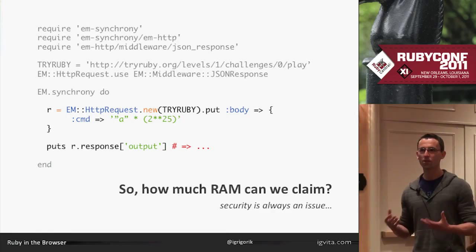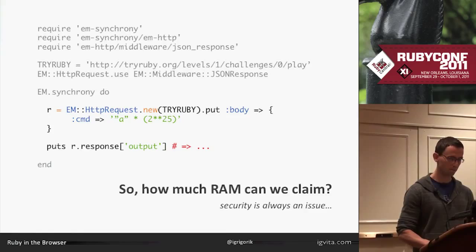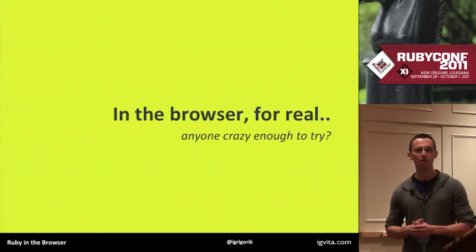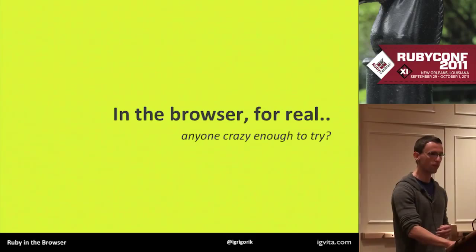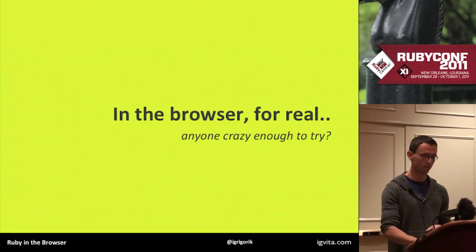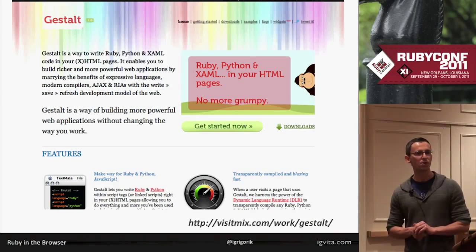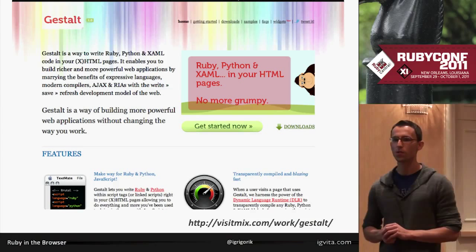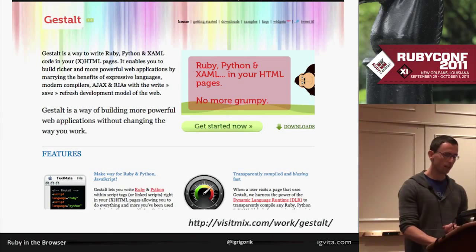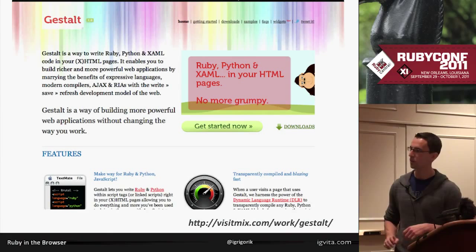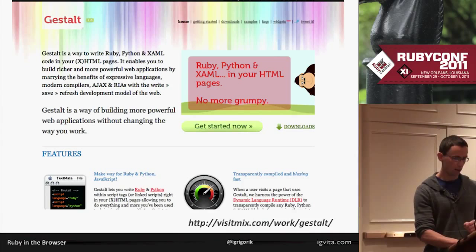So what would it take to actually get Ruby running in the browser? It turns out there have been a couple of different teams - I'm going to pick on three in this presentation, and this is not a complete list. The first one is a project called Gestalt by the Microsoft team, which is actually pretty awesome. They came out with this project probably two years ago and very few people paid attention. What it allows you to do is have code like this in your browser.